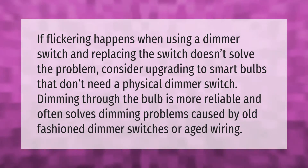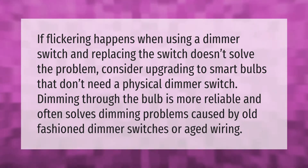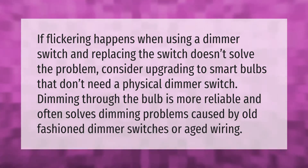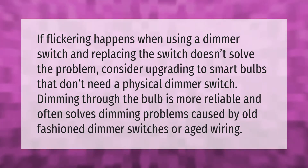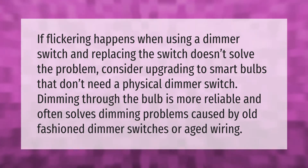If flickering happens when using a dimmer switch and replacing the switch doesn't solve the problem, consider upgrading to smart bulbs that don't need a physical dimmer switch. Dimming through the bulb is more reliable and often solves dimming problems.